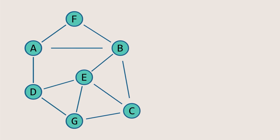Let's dive into how Dijkstra's algorithm works to find the shortest path in a graph. Here, we have a graph with seven nodes, each connected by edges with specific weights.